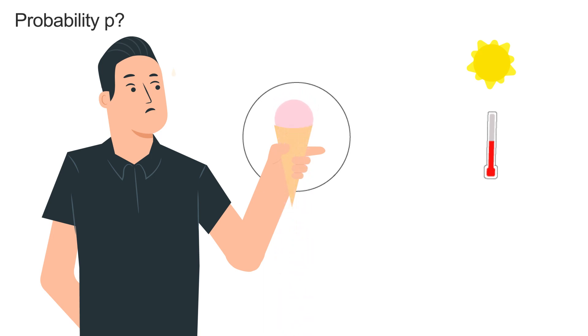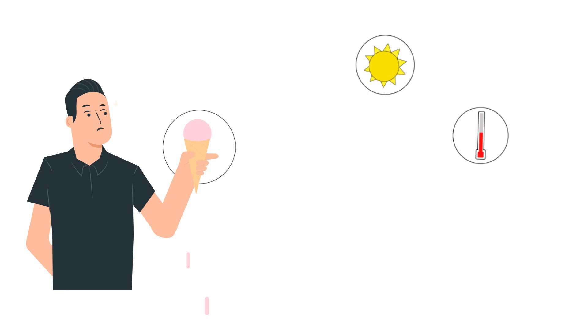We know that the melting rate of the ice cream is influenced by different factors, such as sunshine, temperature, the amount of ice cream, its consistency, and its sugar content.